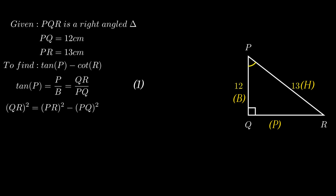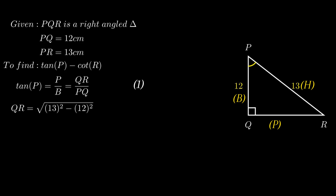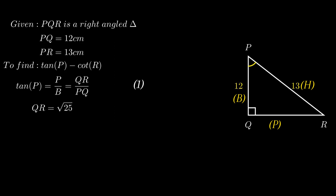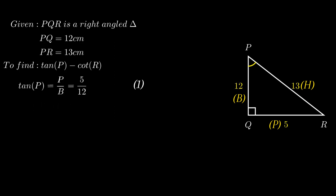So we use the Pythagorean theorem to find the length of QR. Putting in the corresponding values of hypotenuse, perpendicular, and base, we get QR equals the square root of 13 squared minus 12 squared, which simplifies to the square root of 169 minus 144, which equals the square root of 25, which equals 5. Putting the values of QR and PQ into equation 1, we get tan P equals 5 over 12.